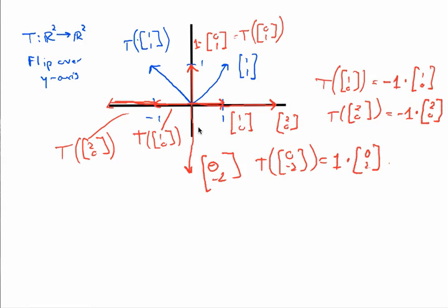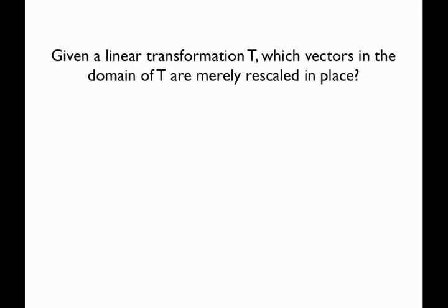So here's a question we might want to ask: if I have a linear transformation from R² to R², or any real space, which vectors are going to be rescaled in place? This is important because transformations can be pretty sophisticated movements of R². The vectors that end up getting scaled in place are like fixed points — as everything else changes under the transformation, certain vectors are staying the same, either left alone entirely or stretched, shrunk, or reflected 180 degrees, but not moved to a totally different direction.